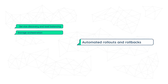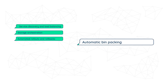Automated rollouts and rollbacks: You can describe the desired state for your deployed containers using Kubernetes, and Kubernetes will calibrate the actual state to fit the desired state at a controlled rate. For example, you can automate Kubernetes to create new containers for your deployment, remove existing containers, and adopt all their resources to a new container. Automatic bin packing: You provide Kubernetes with a cluster of nodes that it can utilize to run containerized tasks.